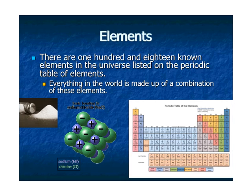Everything in the world is made up of a combination of those elements, which is really hard to think about. If you look at the picture here, you see sodium atoms and chlorine atoms. When they chemically combine and form ionic bonds, they create salt.